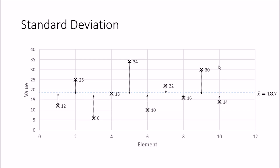In this chart I have listed down 10 elements: the first element has a value of 12, the second has a value of 25, the third has a value of 6, and the fourth has a value of 18. Likewise I have listed down 10 elements, and I have calculated the mean value, which is 18.7.